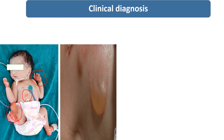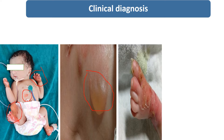This is the image showing new bulla formation at the site of friction over the trunk. And when these bullae rupture, extensive erosive lesions with crusting and erythema appear. You can see over the dorsum of the foot this extensive erosive, erythematous, crusted lesion is present.